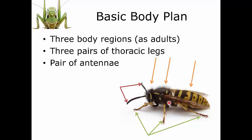Second, there are three thoracic pairs of legs — three pairs for a total of six legs hanging off the different segments of the thorax. Finally, there's a single pair of antennae coming off anteriorly from the head. Three body regions, three pairs of legs on the thoracic region, and a pair of antennae — all these things must be present to make up an insect.